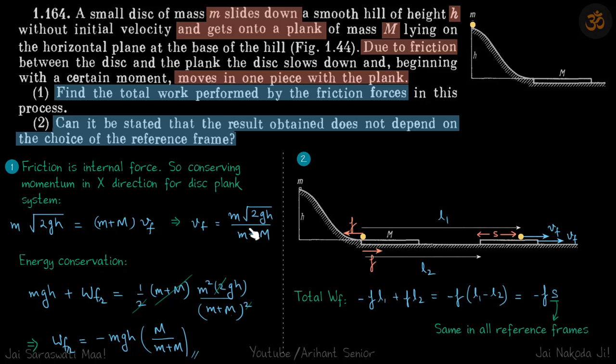Now we need to find the work done by frictional forces. So we'll do energy conservation. So work done by gravity plus work done by frictional force is equal to change in kinetic energy. So mgh plus work done by friction which we need to find is equal to final kinetic energy. And final kinetic energy is of course half total mass into Vf squared.